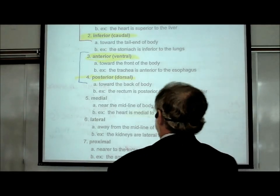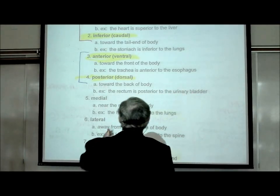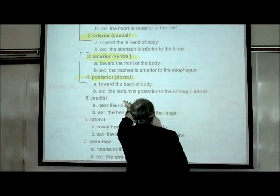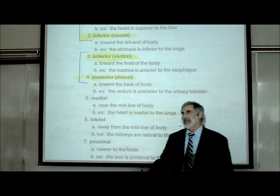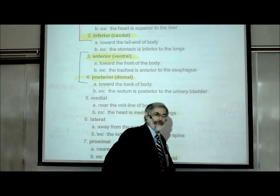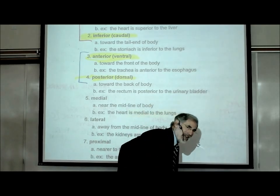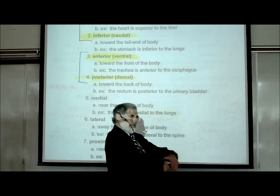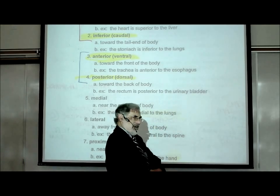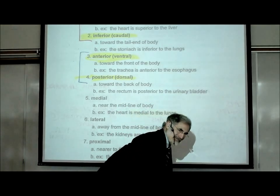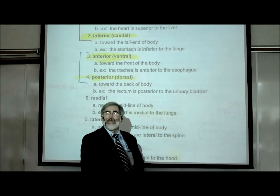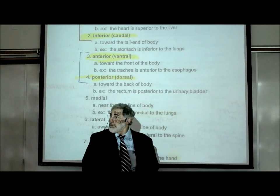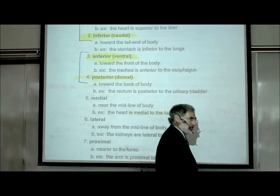Another example: posterior. The rectum is posterior to the urinary bladder. So what does that mean? Posterior means towards the back, as opposed to anterior, meaning towards the front. So the rectum is posterior compared to the urinary bladder, which is on the front. The urinary bladder is anterior.